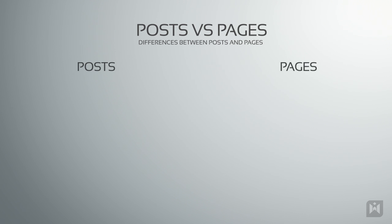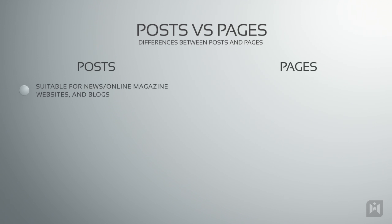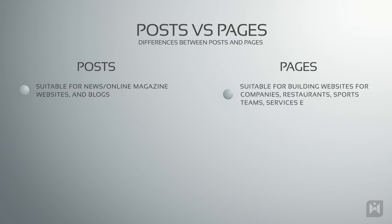Generally speaking, if you are building a news or magazine based website or a personal blog, your main content type will be posts. If you are building a website for a company, restaurant, sports team, or if you're building a website to advertise a service, your website will mainly be driven by pages.